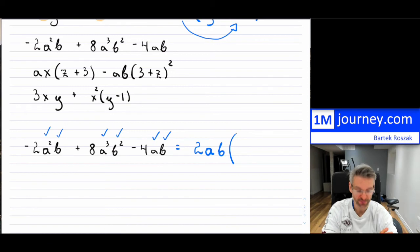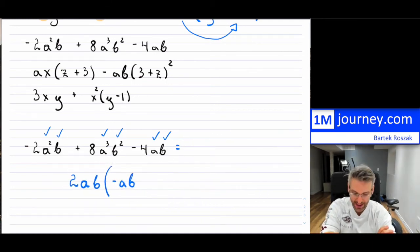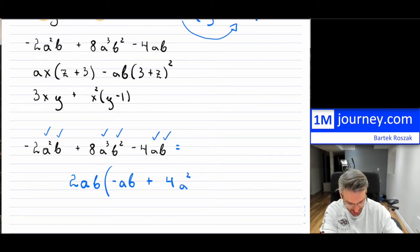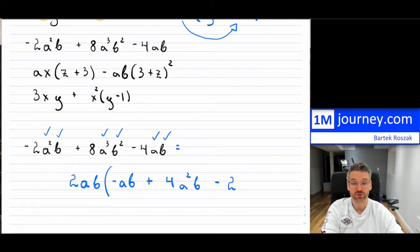So what remains in each term? In the first term, I took out the 2 and the a and the b, so the negative and one a remain — giving negative ab. In the second term, taking 2 out of 8 leaves 4; taking one a out of 3a's leaves 2a's; taking one b out of 2b's leaves one b — giving 4a squared b. In the last term, I took out the 2, the a, and the b, so negative 2 remains — giving negative 2. Therefore the factored form is 2ab times the quantity (negative ab plus 4a squared b minus 2).